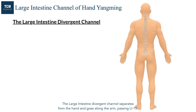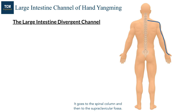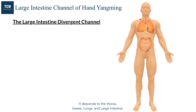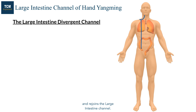The large intestine divergent channel separates from the hand and goes along the arm, passing LI15. It goes to the spinal column and then to the supraclavicular fossa. It descends to the thorax, breast, lungs, and large intestine. There is a branch from the supraclavicular fossa that goes along the throat and rejoins the large intestine channel.